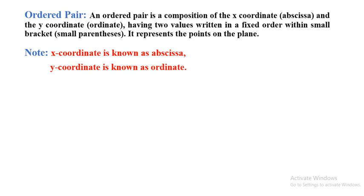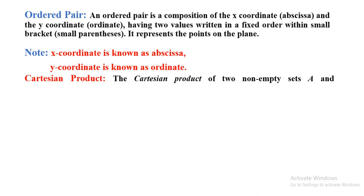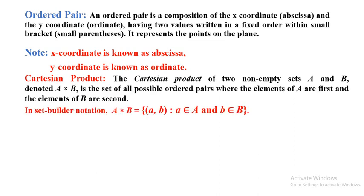Now let's talk about another topic: Cartesian product. The Cartesian product of two non-empty sets A and B, denoted by A×B, is the set of all possible ordered pairs where the elements of A are first and the elements of B are second. Clearly, the Cartesian product is nothing other than the set of ordered pairs.